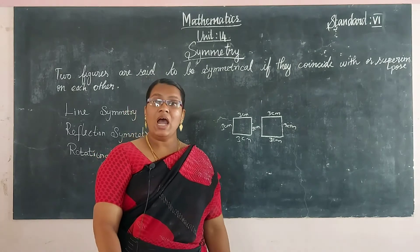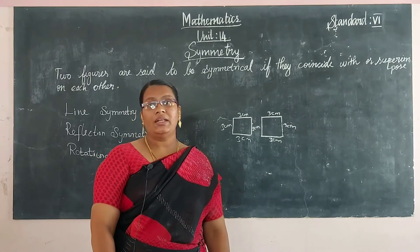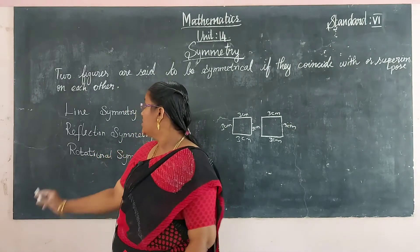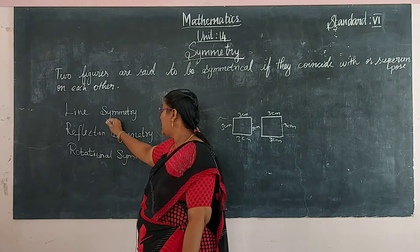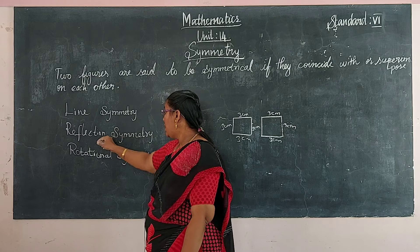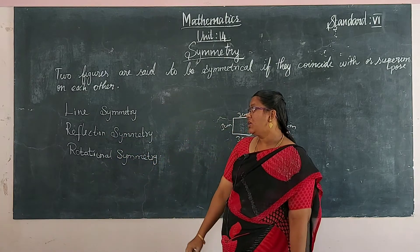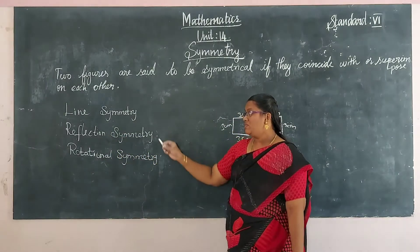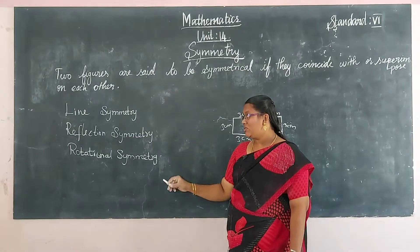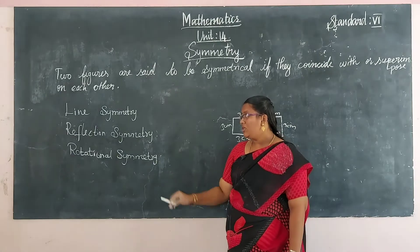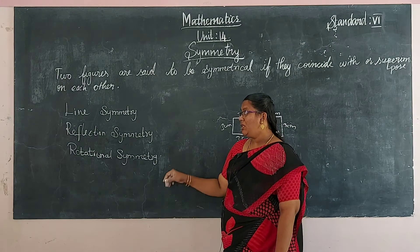Symmetry has three types: the first type is line symmetry, the second is reflection symmetry, and the third is rotational symmetry. In this year, we will learn only two types: line symmetry and reflection symmetry.